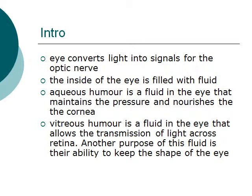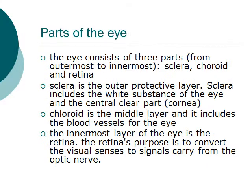Another purpose of these fluids is their role in keeping the shape of the eye. The eye consists of three layers, from outermost to innermost: sclera, choroid, and retina. Sclera is the outer protective layer, which includes the white substance of the eye and the central clear part, also known as the cornea.